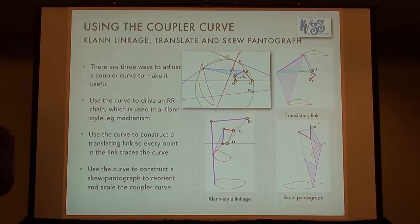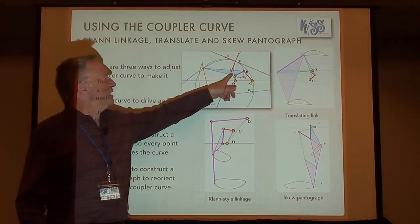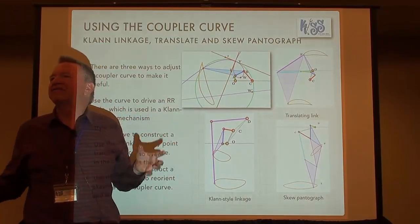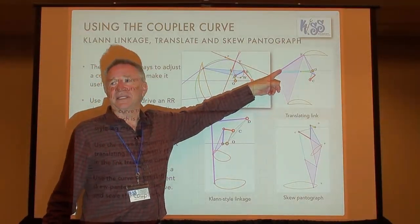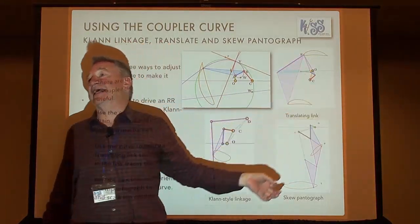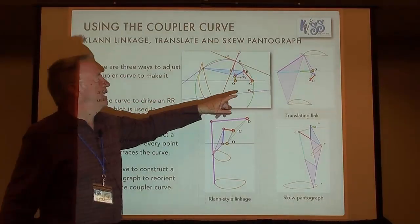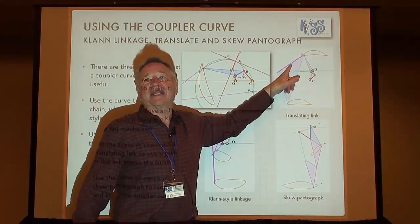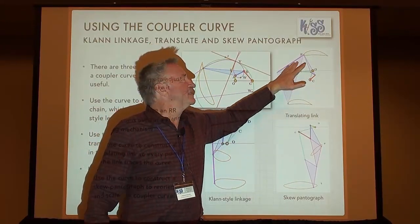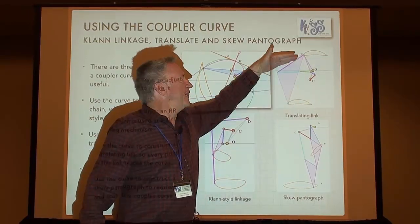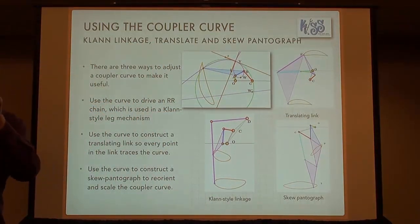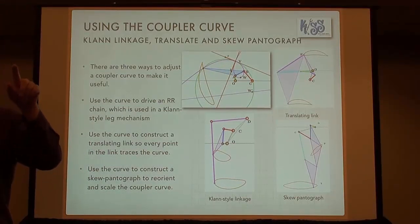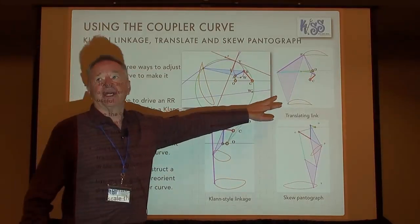Number one is to do what Chebyshev did. It turns out for any coupler point in a four-bar linkage, you can find a dyad you can connect to it so that this link translates — every point in this link follows that coupler curve — and that allows you to position the coupler curve anywhere you want. You can't scale it, but because that link is translating, you can just extend it down to the ground and position it the way you want.